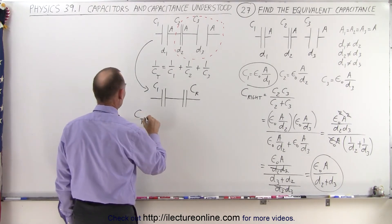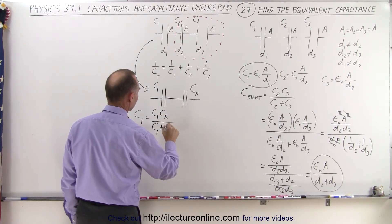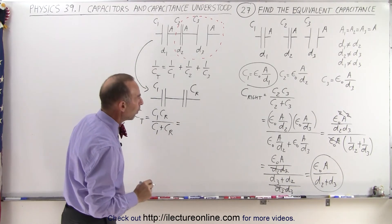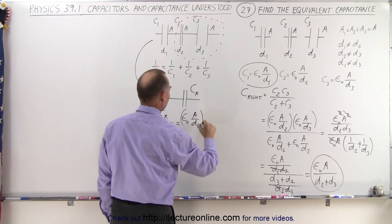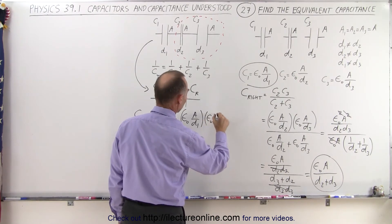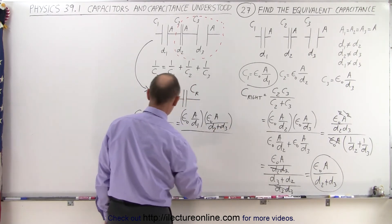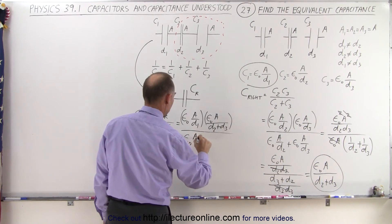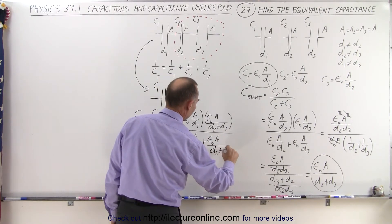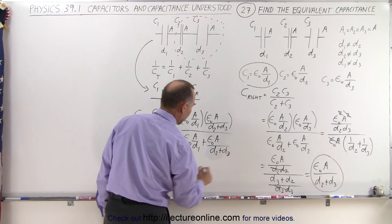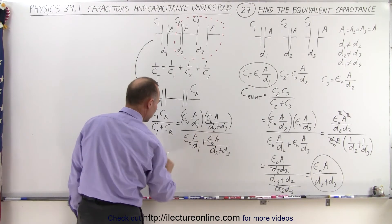C_total is equal to the product C1 times C_R divided by the sum C1 plus C_R. So in this case, C1 is epsilon sub-naught A over D1, multiplied times C_R which is epsilon sub-naught A over D2 plus D3, all divided by the sum, which is epsilon sub-naught A over D1 plus epsilon sub-naught A over D2 plus D3. It doesn't look too bad because we can factor out an epsilon sub-naught A on the bottom.